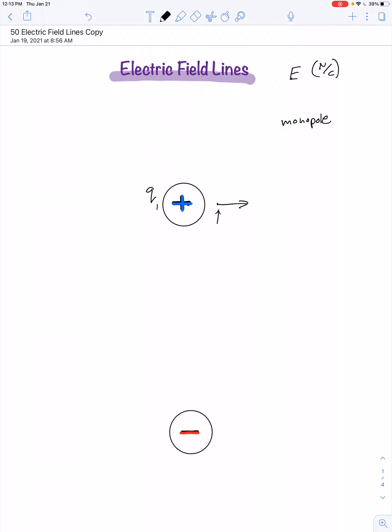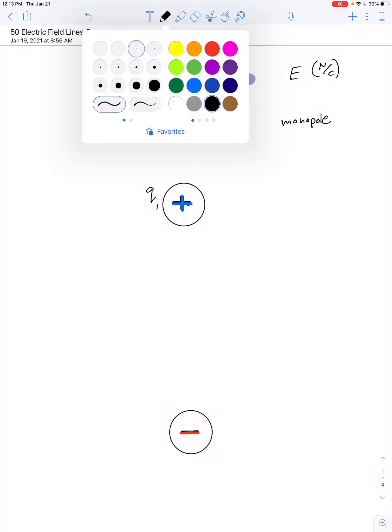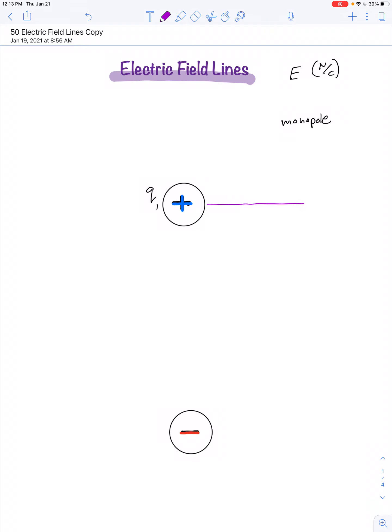So, we imagine placing a little positive charge right here. It would accelerate because of the electrostatic repulsion in this direction. If we place a little positive charge here, it would accelerate, but not with as great of magnitude. And the farther away we get, the smaller the force becomes. Well, we can show all of that with just one continuous electric field line pointing radially outward from the charge.